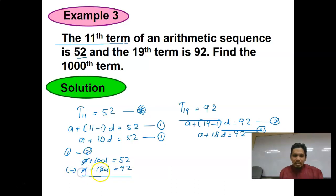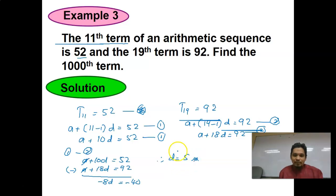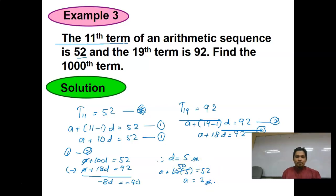Subtracting Equation 1 from Equation 2: A − A = 0, 10D − 18D = −8D, and 52 − 92 = −40. So D = −40 ÷ −8 = 5. Substituting D = 5 into Equation 1: A + 10×5 = 52, so A + 50 = 52, giving A = 2.